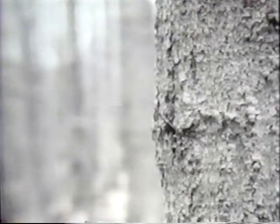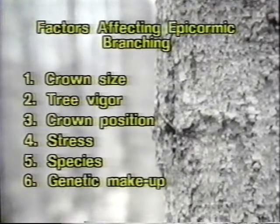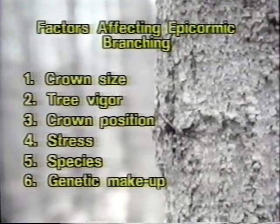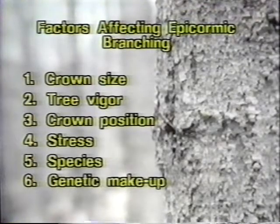Let's move on to another especially important area: skill in evaluating epicormic branching. A forester must be able to assess the probability a tree may have for epicormic branching, as well as the degree to which it could occur. Epicormic branching is affected by several interacting factors such as crown size, crown size relative to DBH, tree vigor, crown position, stress, species, and genetic makeup.